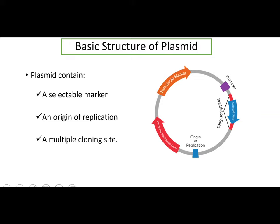Talking about the basic structure of plasmid, which is a circular DNA, this structure represents your plasmid. A plasmid is divided into three important regions. The first is the selectable marker — as we discussed, antibiotic resistance is your selectable marker. The second is the origin of replication, represented by the orange arrow in this picture, which is where replication starts. The third region contains multiple cloning sites.